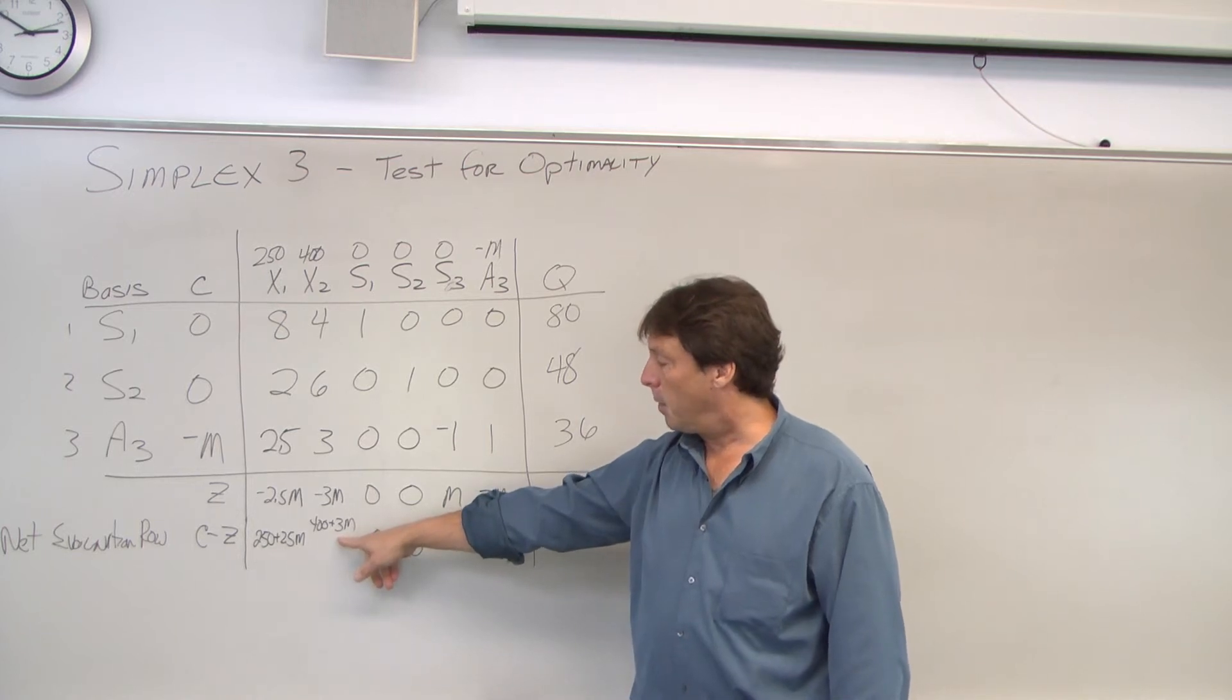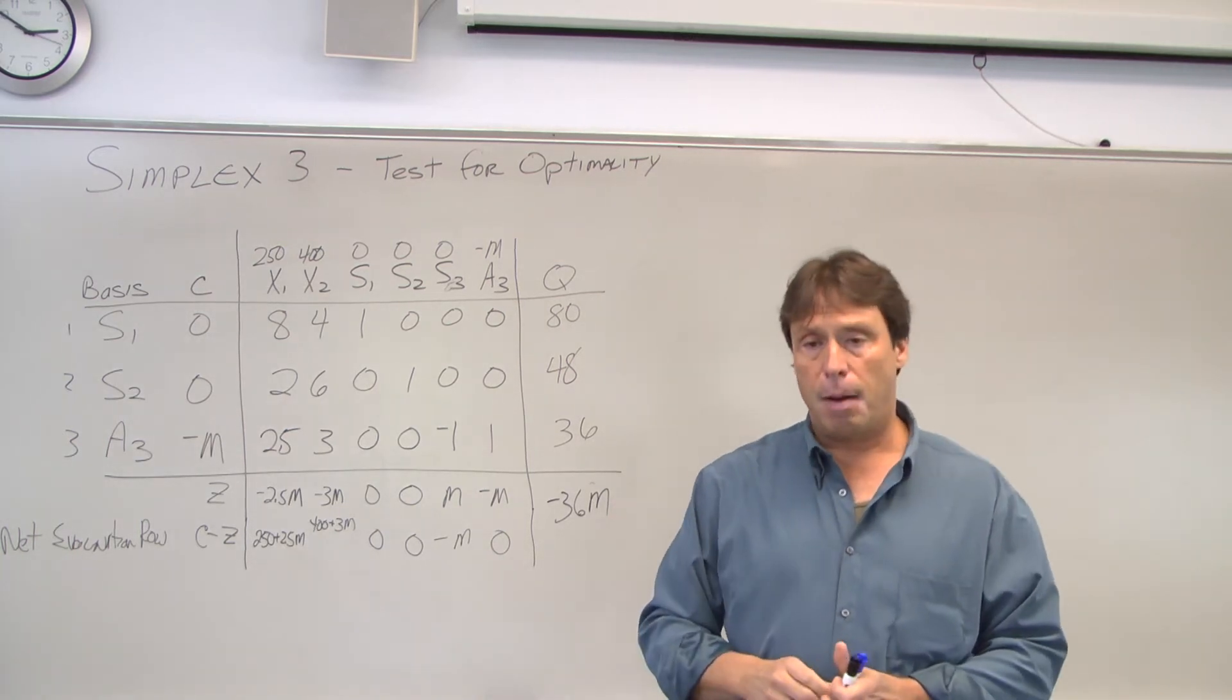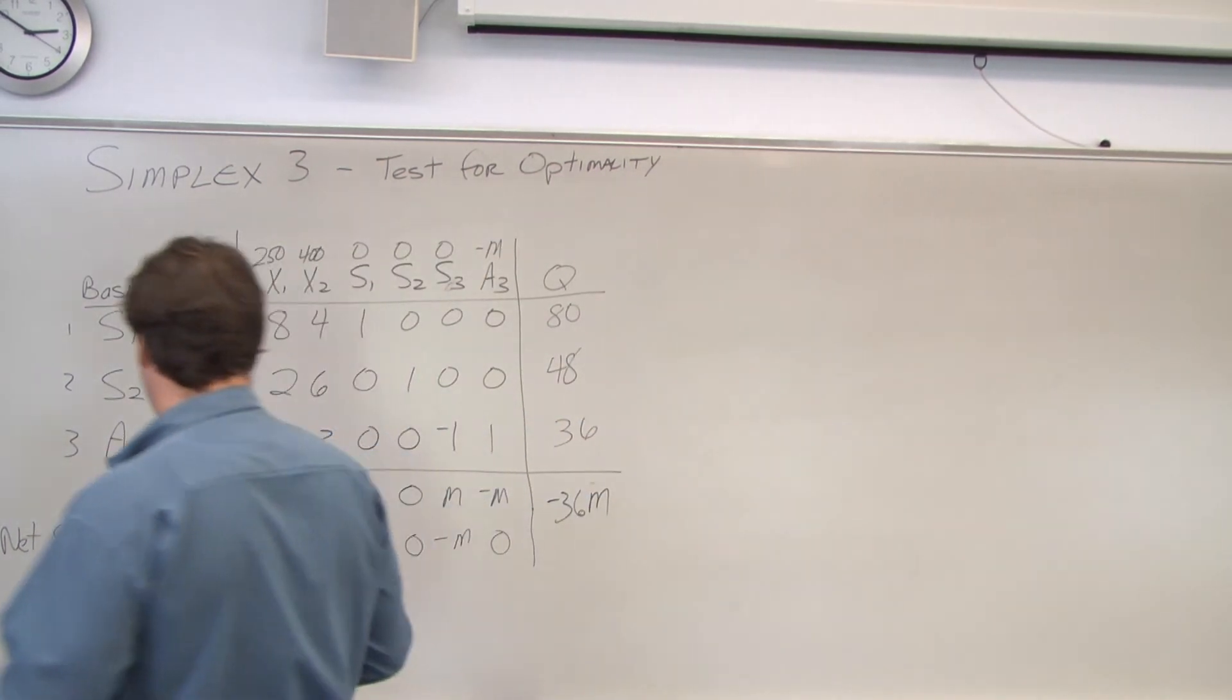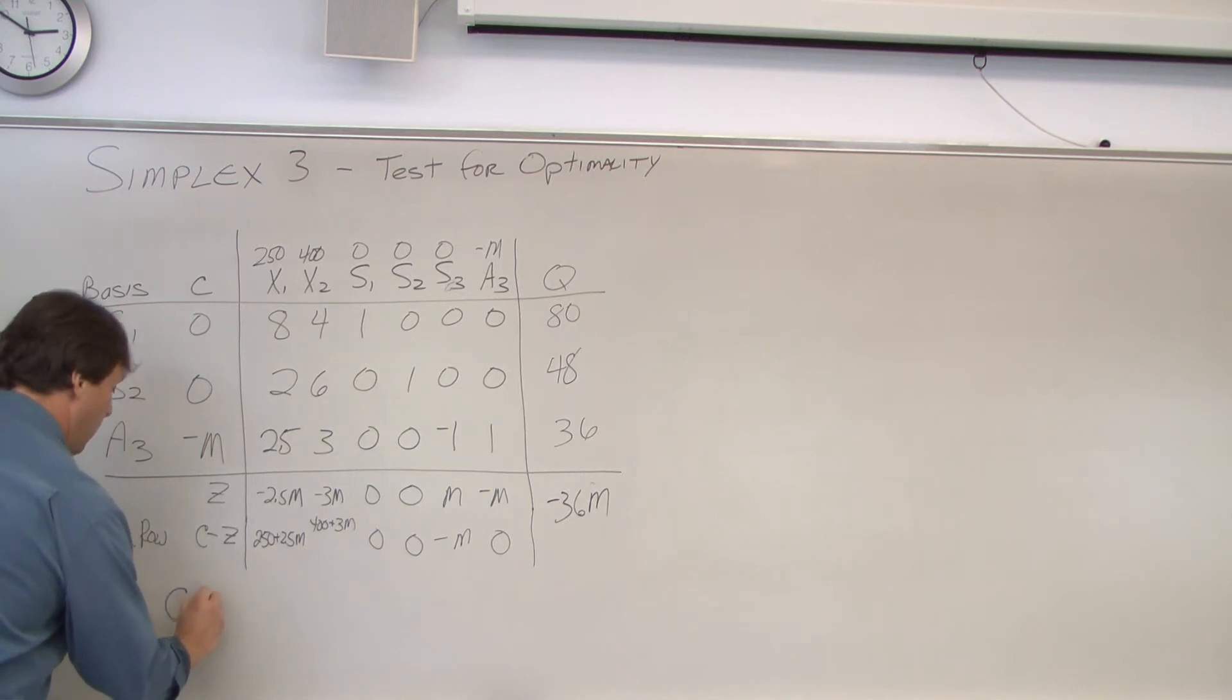To be at an optimal solution, we can't find any more profit. In other words, our net evaluation row has to be less than or equal to zero for optimal. And again, we have a maximization problem.